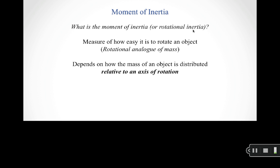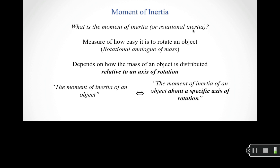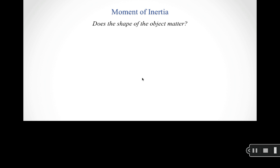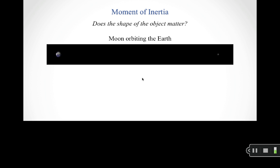The moment of inertia depends on how the mass of the object is distributed relative to some axis of rotation. When we say the moment of inertia of an object, we always mean the moment of inertia about a specific axis of rotation — the axis always matters.